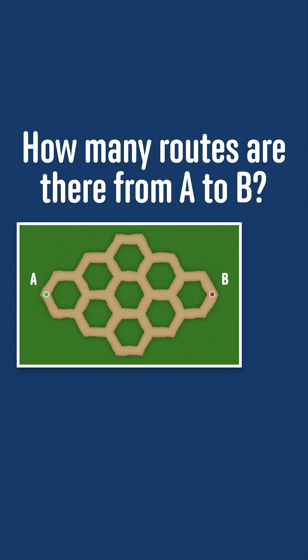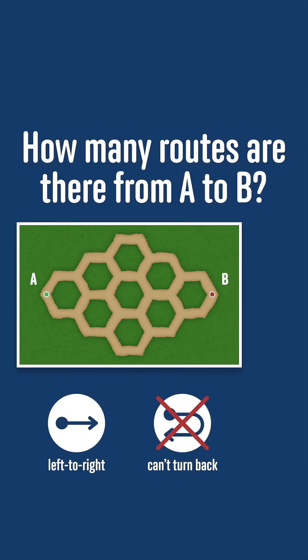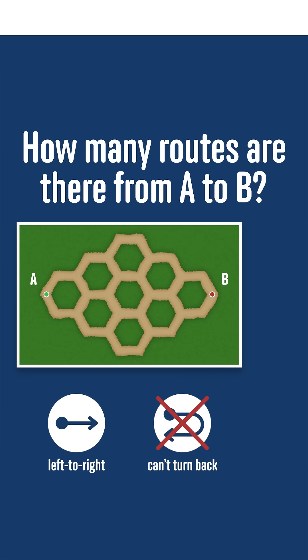You're walking through a garden and the paths are laid out in this pattern. You start at A and finish at B, only ever walking from left to right and never turning back. How many different routes can you take?